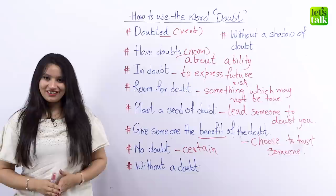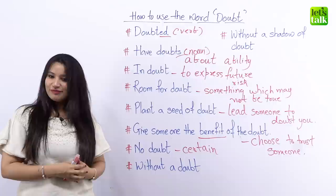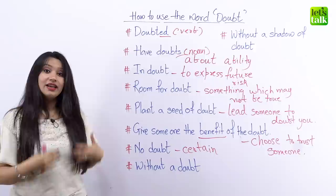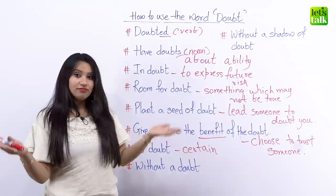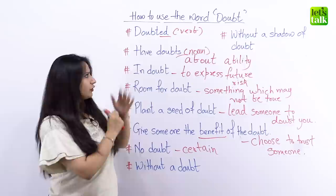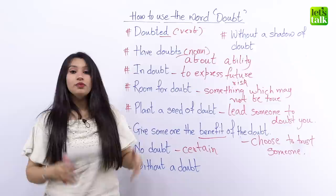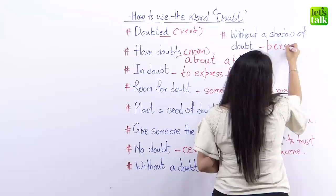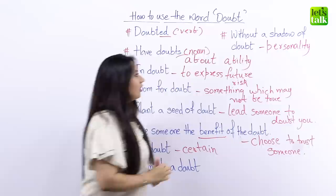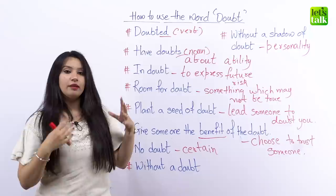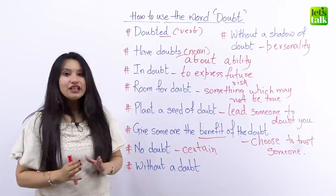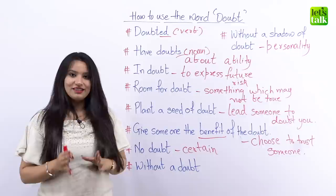Let's get a little more creative and see how to say the same thing in another way: 'without a shadow of doubt.' As it clearly states, you have absolutely no doubts about something. You might use this to describe someone's personality. For example: 'I've known him for three years, and without a shadow of doubt, he's a really honest guy.' So that's how you can describe someone's character using this phrase.